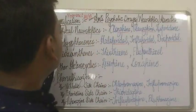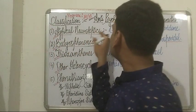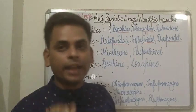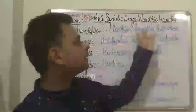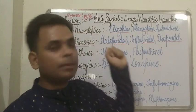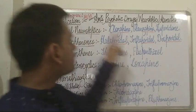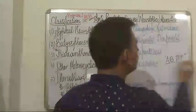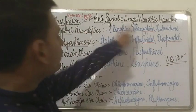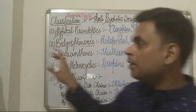The first class of antipsychotic drugs are the atypical neuroleptics — this is the 'A' of AB TOP. These drugs often carry the suffix '-apine.' The atypical neuroleptics comprise clozapine, olanzapine, and risperidone.